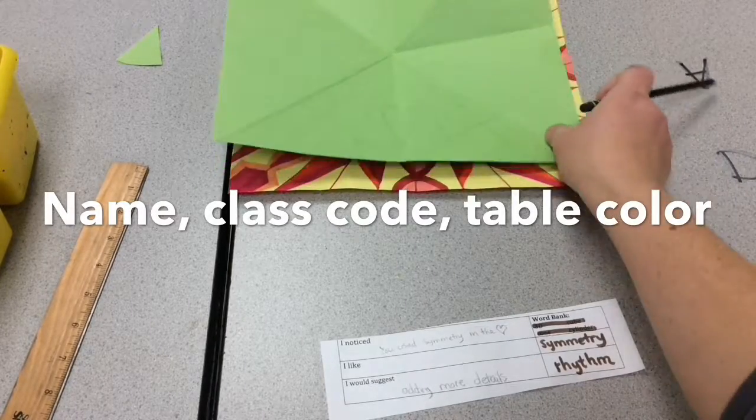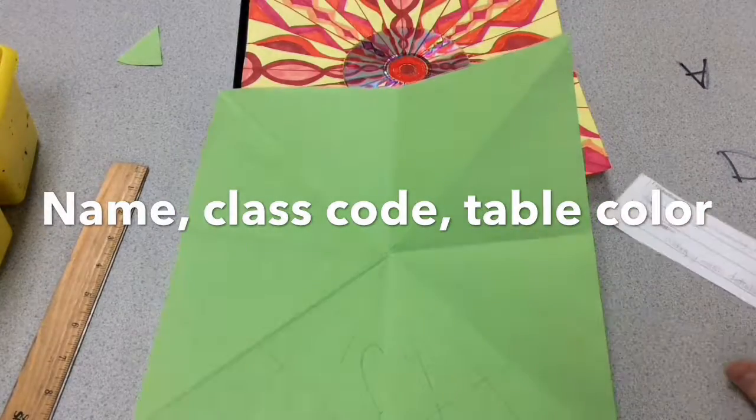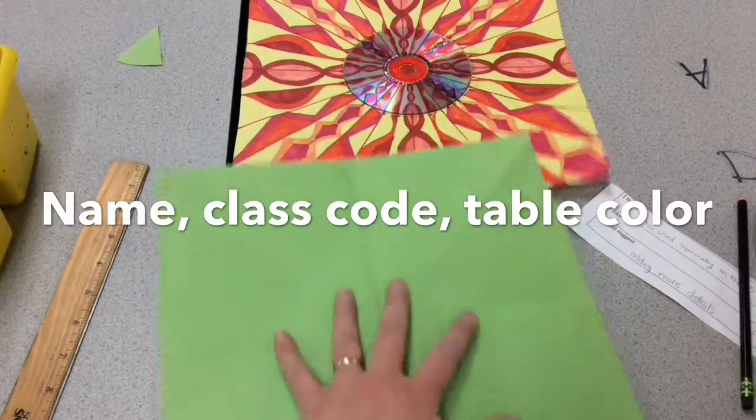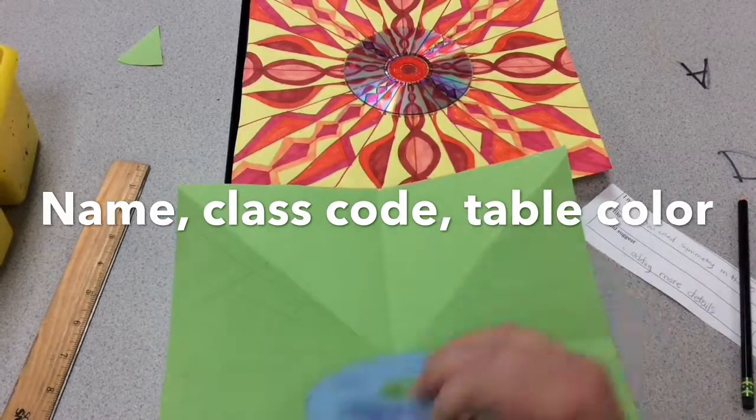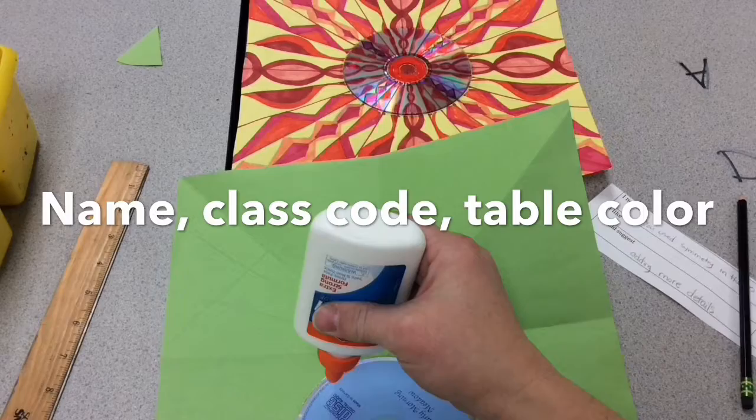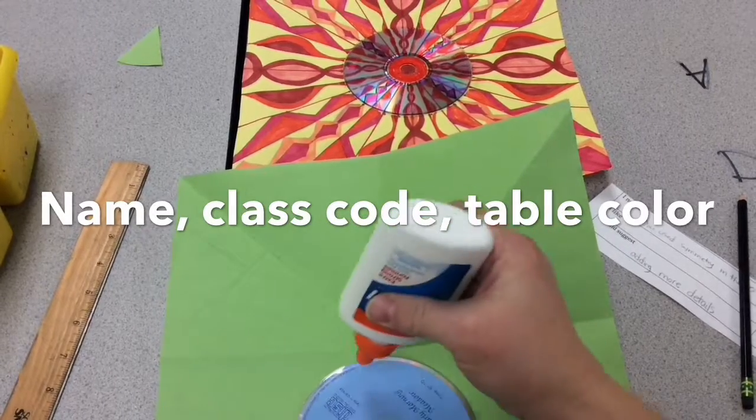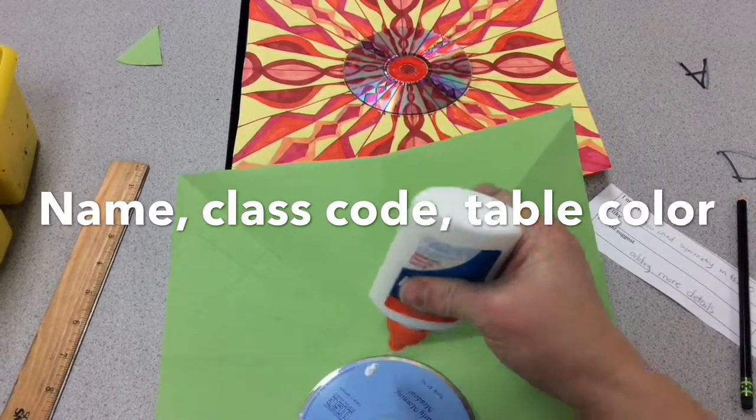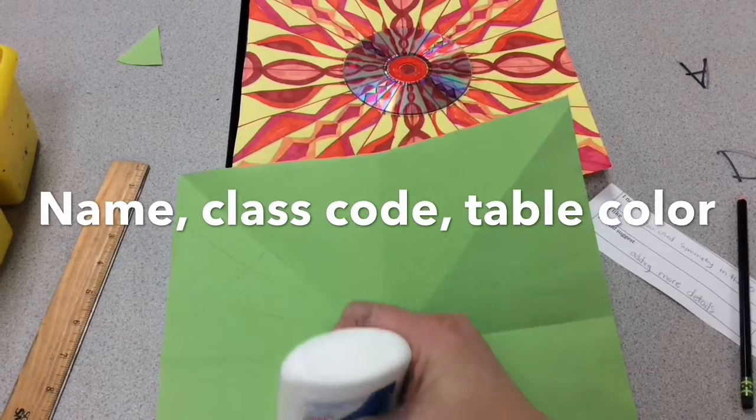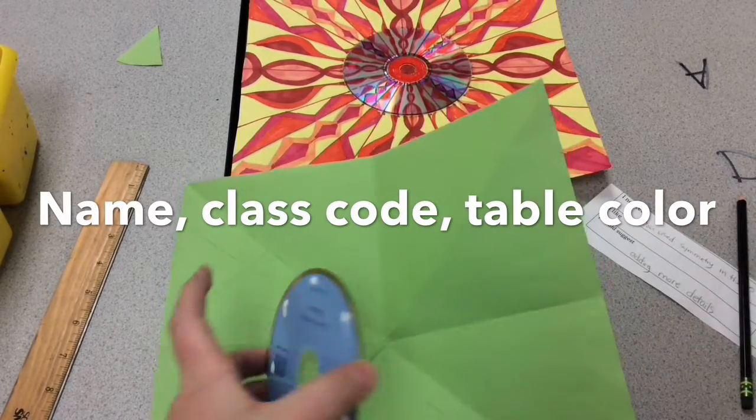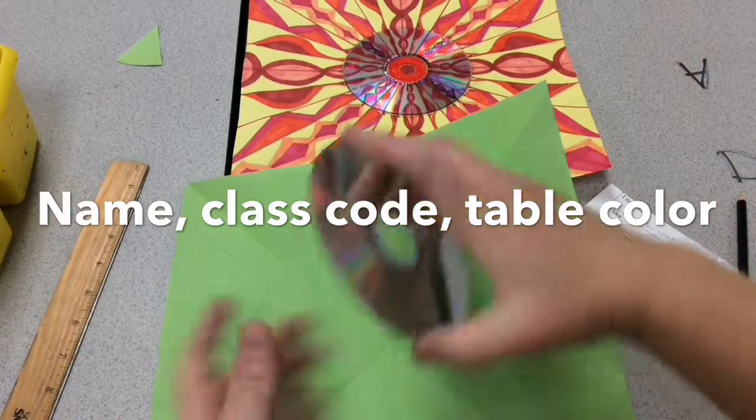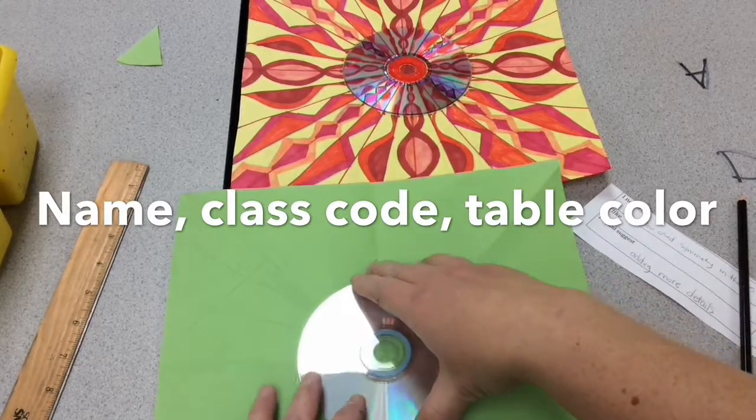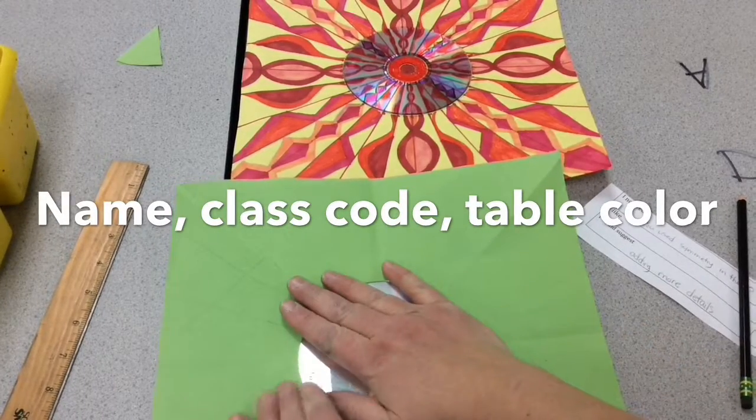Then you're going to go back to your seats. What you're going to do before you leave is you're going to glue the CD on. You're going to let these dry for next week. So if you remember from younger grades, those of you that are here, we do dot, dot, not a lot. I'm going to go around the outside of the CD, put some dots of glue. You're going to line up the middle. Just press down.